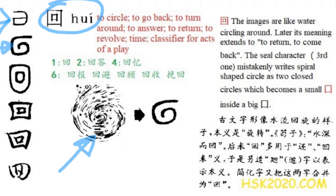Later its meaning extends to 'return,' to come back, because when you circle around you come back to a similar position, the original position. So this is how its meaning came from. 回 means to go back, to return, to turn around, to answer.